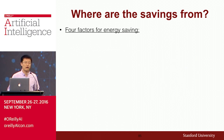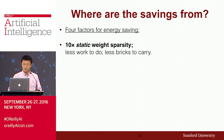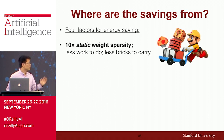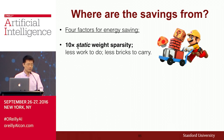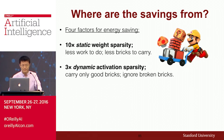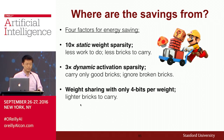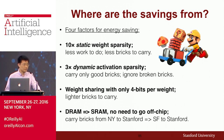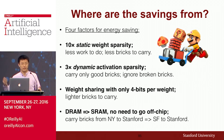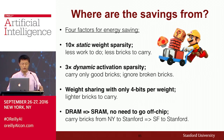Where do these gains come from? Using an analogy of Super Mario carrying bricks: first, we have less work to do — 10x sparsity means only 10% of computations needed. Second, 3x dynamic activation sparsity — we only carry good bricks, ignoring broken ones. Third, weight sharing means each weight is lightweight at only 4 bits — lighter bricks. Fourth, we fit all weights in on-chip SRAM, so we no longer go to off-chip DRAM — like carrying bricks from San Francisco to Stanford instead of from New York. That's why there are so many energy savings.